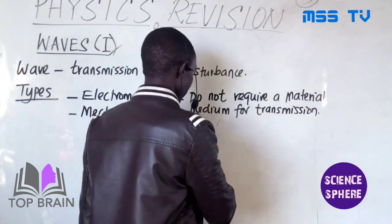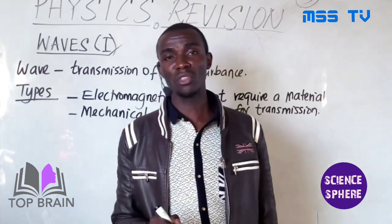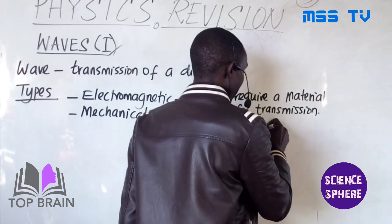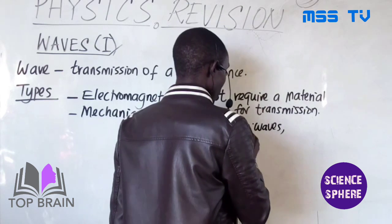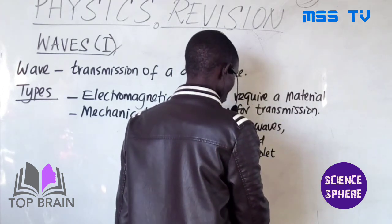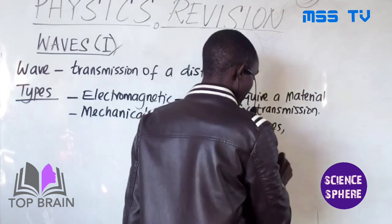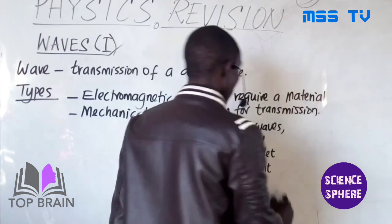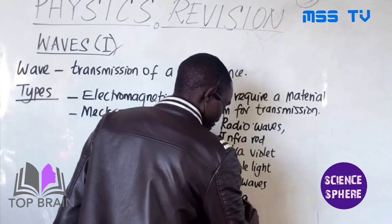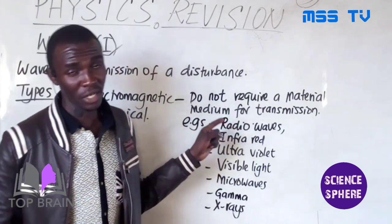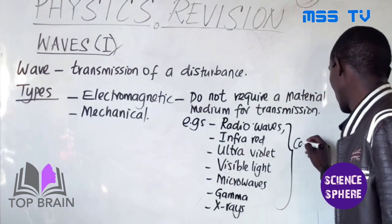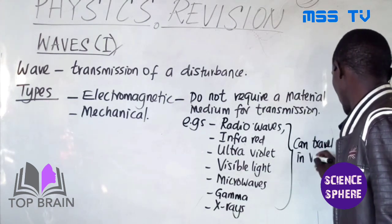Examples of electromagnetic waves: all waves in the electromagnetic spectrum — all the radiations and waves in the EMS. These include radio waves, infrared, ultraviolet, visible light, microwaves, and many others including gamma rays and X-rays. So all these are called electromagnetic waves and they do not require a material medium to propagate — they can travel in vacuum.